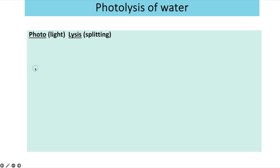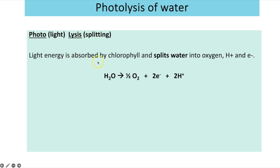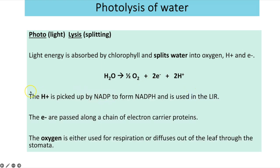Photolysis — photo means light, lysis means splitting. This is the stage where light energy absorbed by the chlorophyll splits water into oxygen, electrons and protons. The protons (H+) are picked up by NADP to form reduced NADPH. The electrons pass along the electron carrier proteins in the electron transport chain. The oxygen is not used in photosynthesis, so it may be used in respiration or will diffuse out of the leaf.